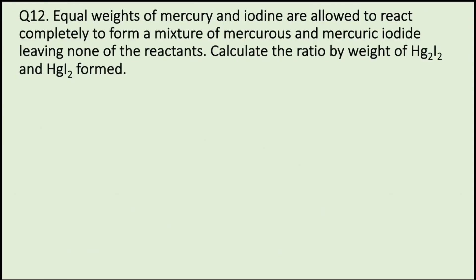Question 12. Equal weights of mercury and iodine are allowed to react completely to form a mixture of mercurous and mercuric iodide, leaving none of the reactants. Calculate the ratio by weight of Hg₂I₂ and HgI₂ formed.